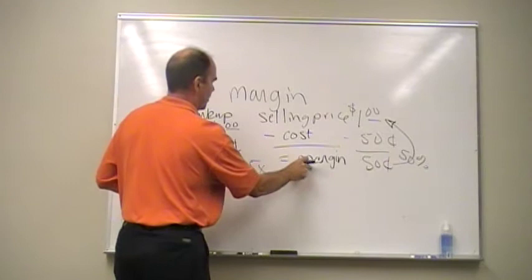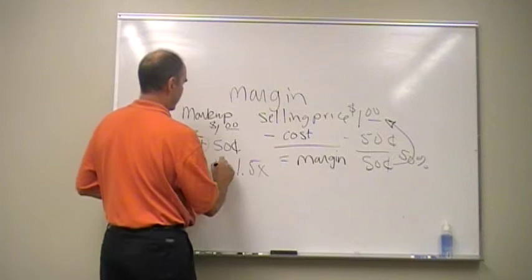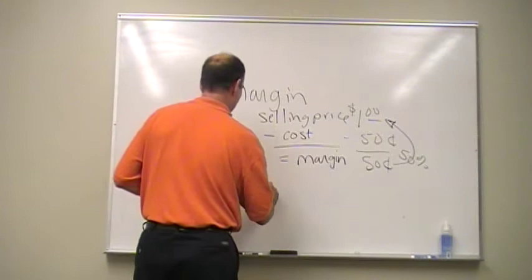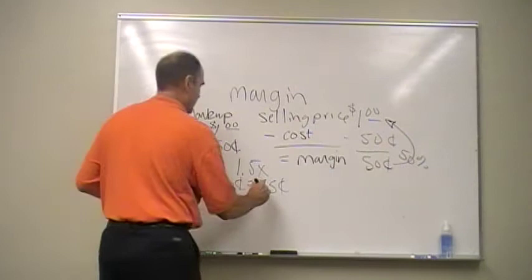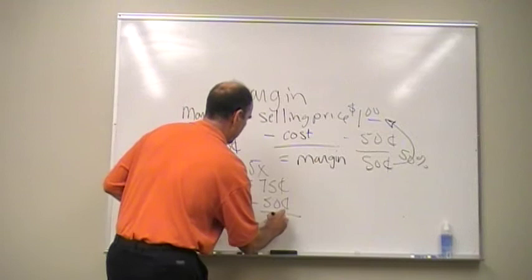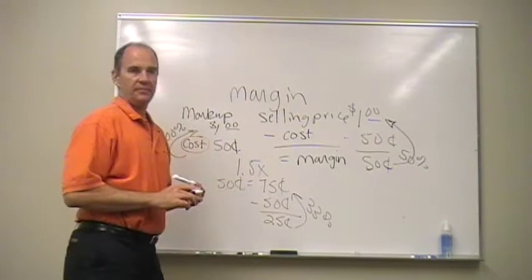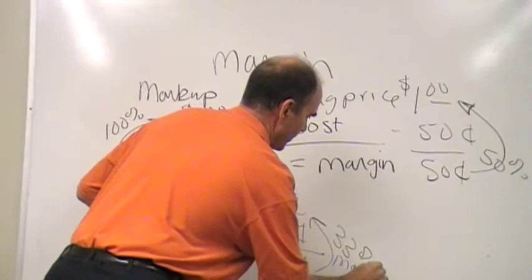Let's take 1.5 times our 50 cents. That is going to equal 75 cents, right? 1.5 times 50 is 75 cents. That's 75 cents minus our 50 cents cost of goods gets us 25 cents. And voila, we have a 33% margin. Markup and margin are not the same things.